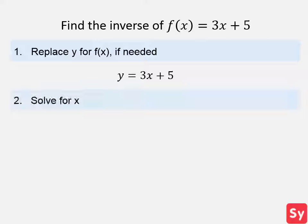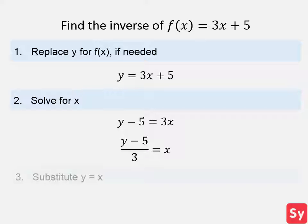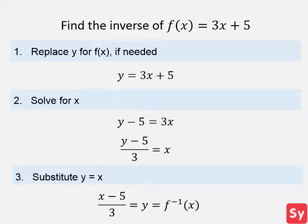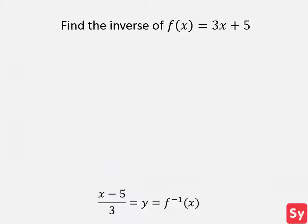Next step, we want to solve for x. So we subtract 5 from both sides, and then we divide both sides by 3. Next step, we want to substitute x with y and y with x. So we have y equals x minus 5 over 3, and this is the inverse.